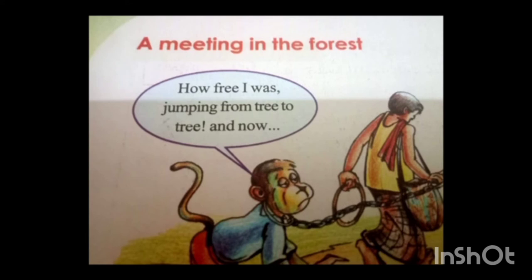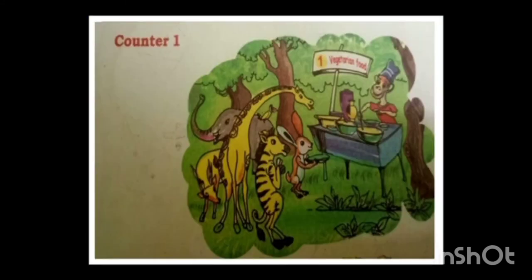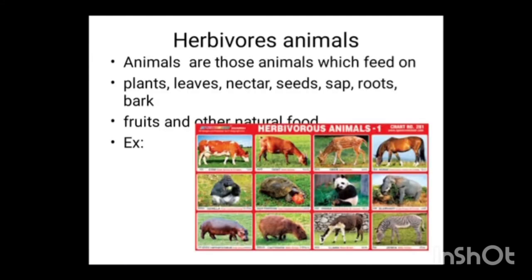Food was prepared for all of them and arranged at two places — counter 1 and counter 2. In counter 1 we can see zebra, giraffe, rabbit, deer, elephant, etc. Herbivores are animals which feed on plants, leaves, nectar, seeds, sap, roots, bark, fruits, and other natural foods. For example, cow, goat, deer, horse, elephant, zebra, etc.